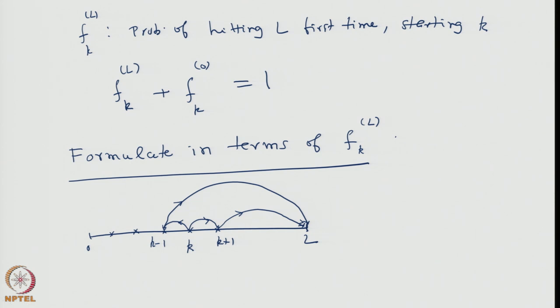One must distinguish this equation from the random walk jump equation. In the random walk jump equation, K−1 was multiplied by P and K+1 by Q, whereas here it is the reverse. Although it looks deceptively similar, it is structurally different. The first term gives the probability that the random walker jumped left and from there reached target L, and the second that he jumped right and reached L.